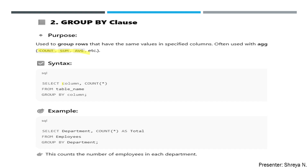The syntax is: SELECT column_name, COUNT(*) FROM table_name GROUP BY column_name. You can use any aggregate function here. For example: SELECT department, COUNT(*) AS total FROM employees GROUP BY department. This selects the department column, counts all the data, and saves it into a new column called 'total'.